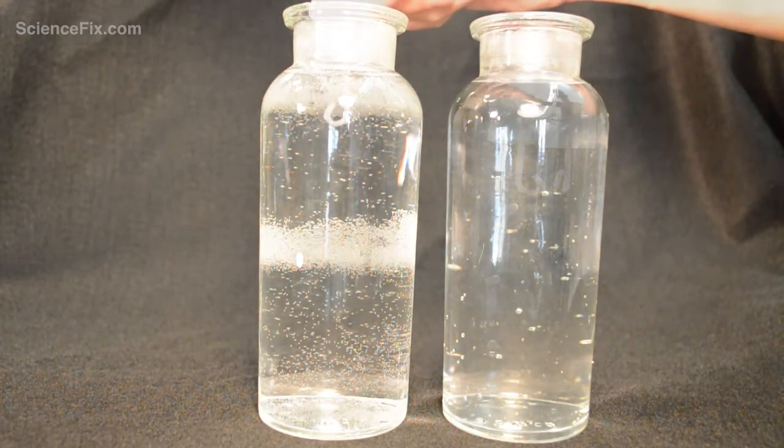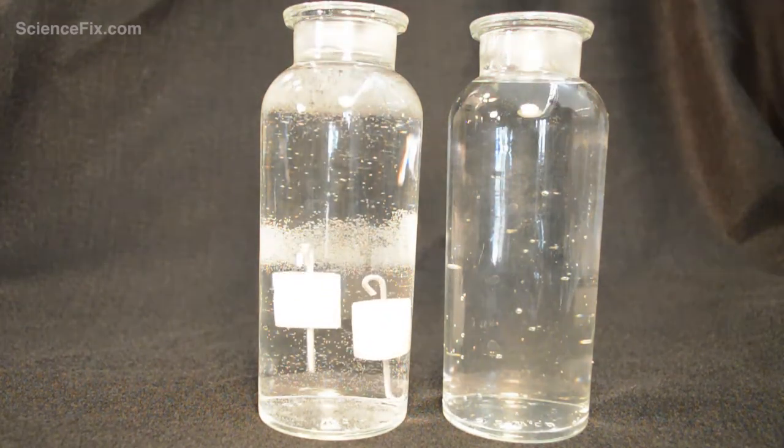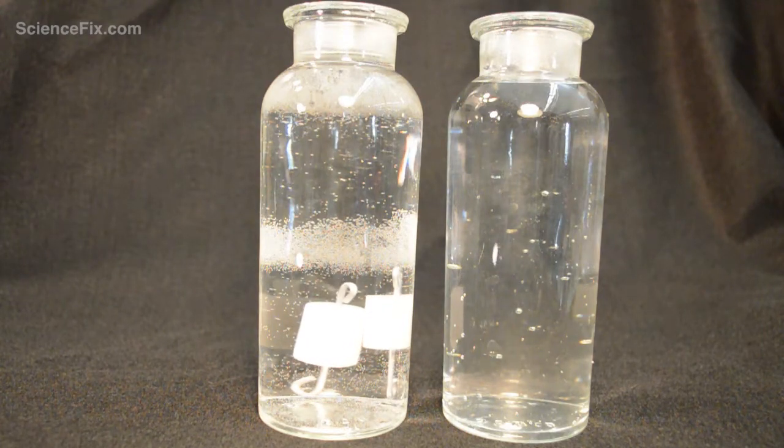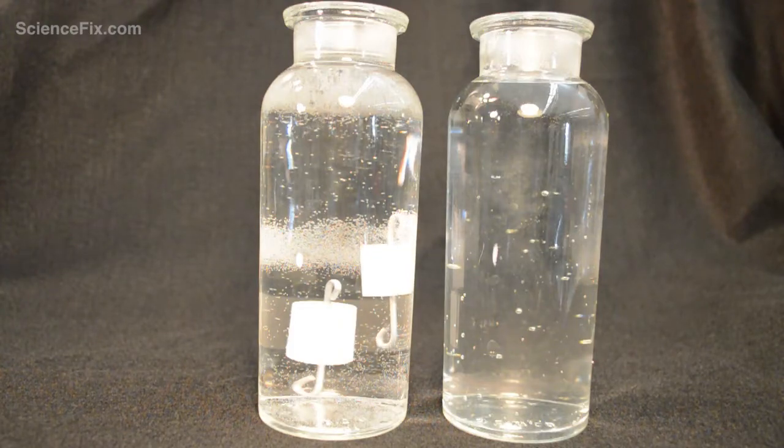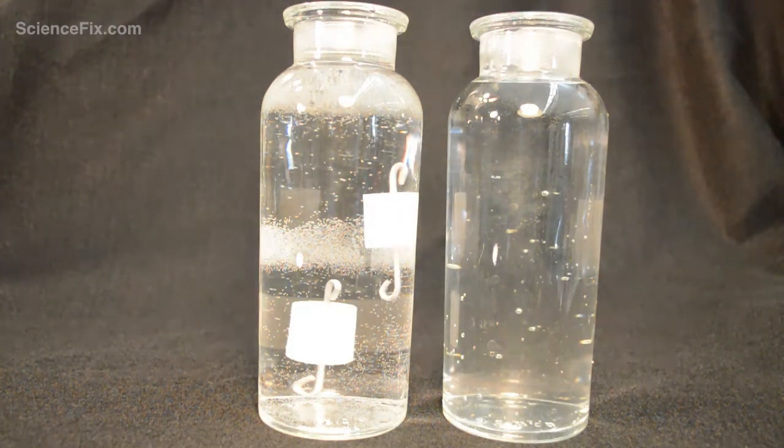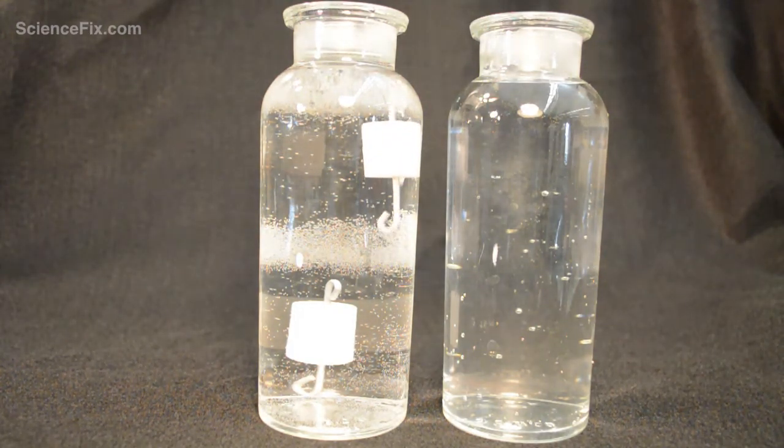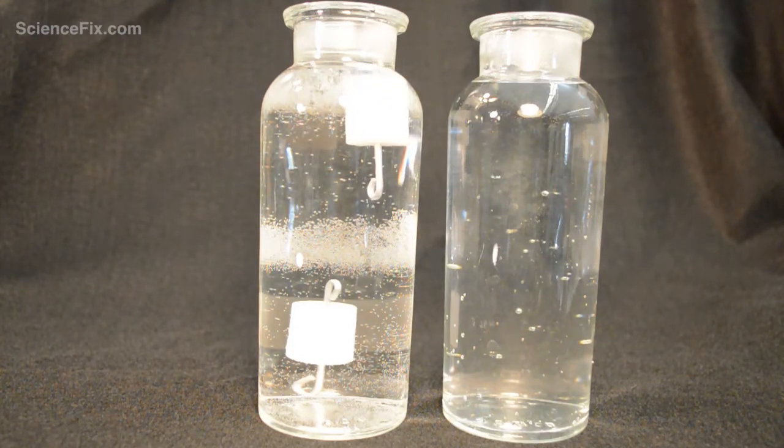So what happens is, these objects, the white part of these objects are made of plastic. And this type of plastic, when increased in temperature, will expand a little bit. And if the material expands a little bit, it's increasing its volume.